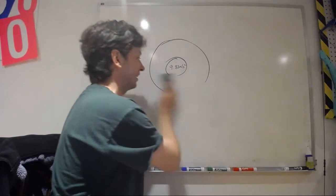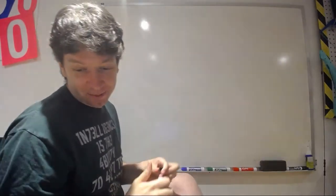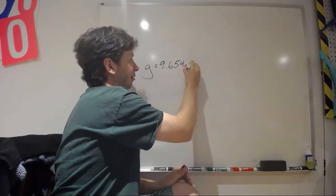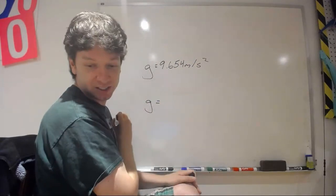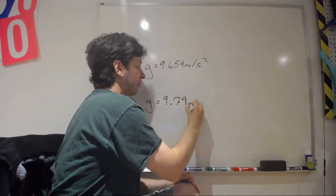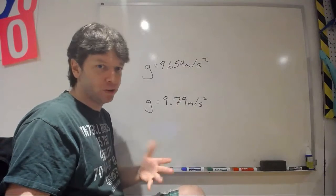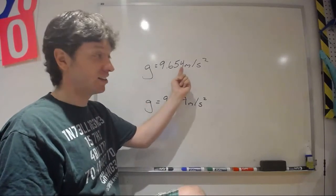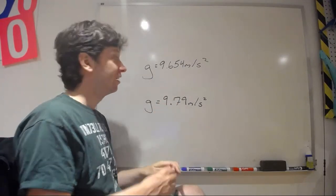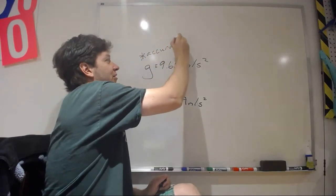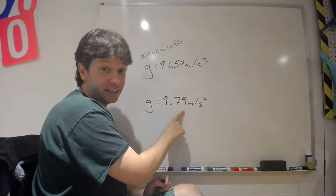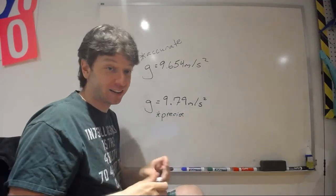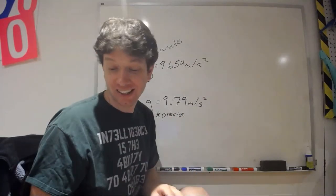Let's look at what this means mathematically. Two people do an experiment. One person got g = 9.654 m/s², another got g = 9.79 m/s². Which is more accurate and which is more precise? For accuracy, look at significant digits — the first person was uncertain about the thousandths digit, the second about the hundredths digit, so the first person was more accurate. However, 9.79 is much closer to the theoretical value of 9.81, so the second group is more precise. That's the difference between precision and accuracy.